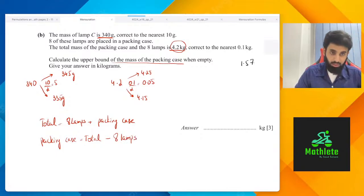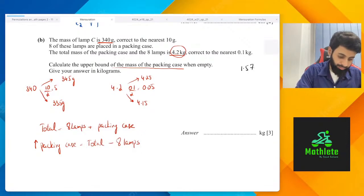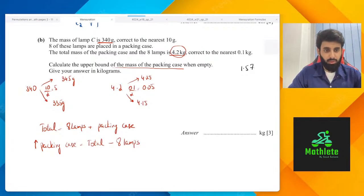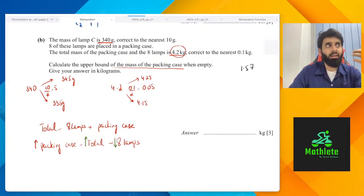I have a question for you guys. If you want the upper bound of the packing case, what are you going to do with the total and what are you going to do with the eight lamps? That is correct. So if you want the upper bound of the packing case, we will maximize the total and we will minimize the eight lamps. We are going to have a value from which we are subtracting as great as possible, and the value that we are subtracting, we are going to have that as less as possible, so that towards the end we have as much as possible left.